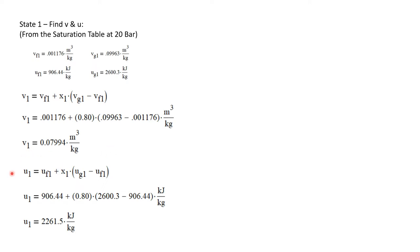We can now do the same for finding the internal energy at state 1. The internal energy is u_f plus the quality times u_g minus u_f. All of these, again, state 1 properties. So they came from the table here. Inserting those values into this equation, we will calculate that the internal energy at state 1 is 2261.5 kilojoules per kilogram.